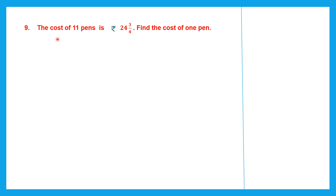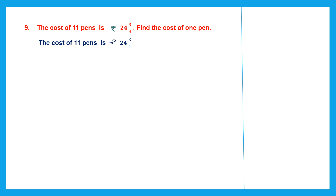Question 9. The cost of 11 pens is 24 and 3 by 4 rupees. Find the cost of one pen. So whenever the cost of many — that is 11 — is given and you're asked to find the cost of one, then it is a division word problem.